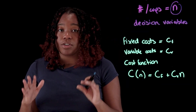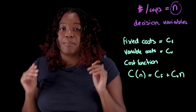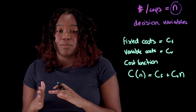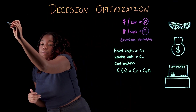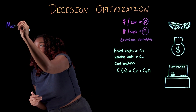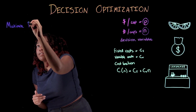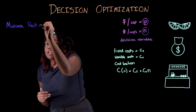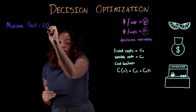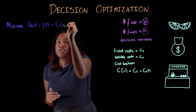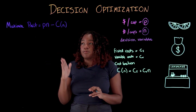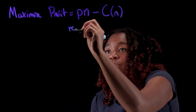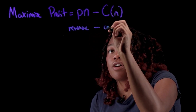Now let's write our goal as a formula. Our goal is to maximize profit, which means increasing our revenue and decreasing our costs. So we want to maximize our profit, which is equal to P times N minus C(N), our cost function. This is the objective function of the problem — the objective we need to solve, which is maximizing profit, equal to revenue minus cost.